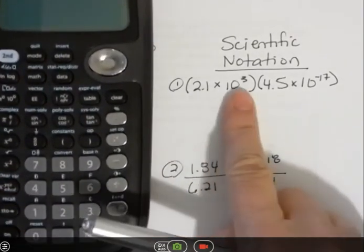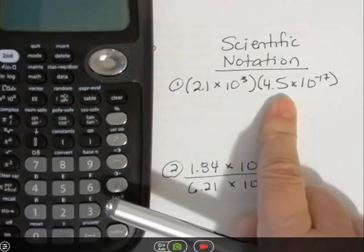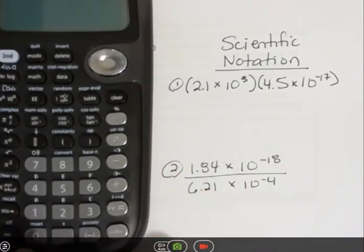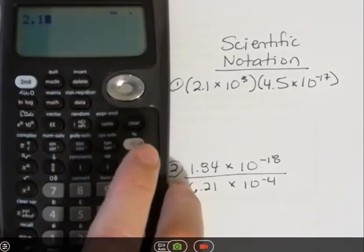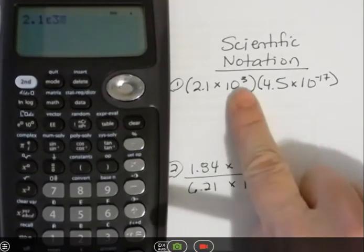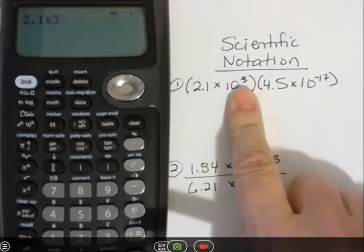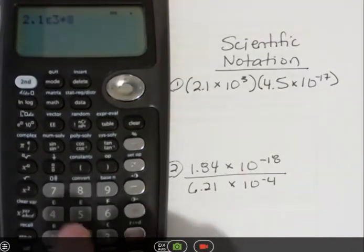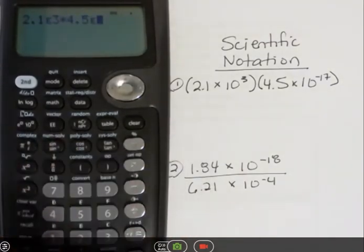So for 2.1 times 10 to the third times 4.5 times 10 to the negative 17th, I would enter 2.1 and then the EE button and then 3, because that's the power for this particular number. And then I'm going to hit times and 4.5e and then negative 17.